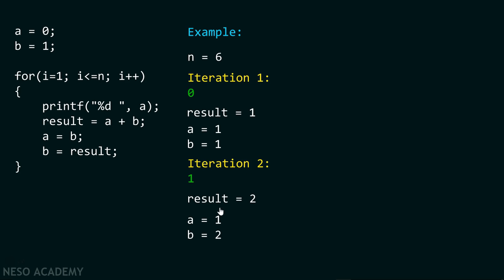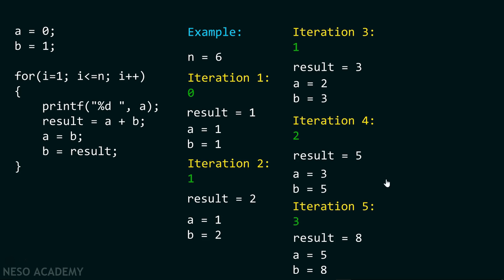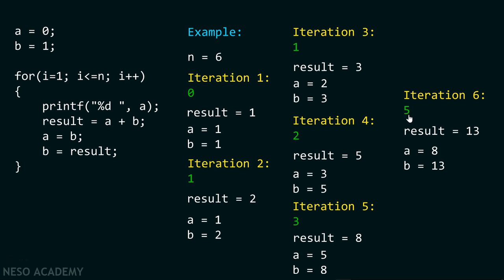In iteration 3, we print 1. Result becomes 1+2=3, then a becomes 2 and b becomes 3. In iteration 4, we print 2. Result becomes 5, a becomes 3, b becomes 5. In iteration 5, we print 3. Result becomes 8, a becomes 5, b becomes 8. In iteration 6, we print 5. Result becomes 5+8=13. Therefore, the series printed is: 0, 1, 1, 2, 3, 5.